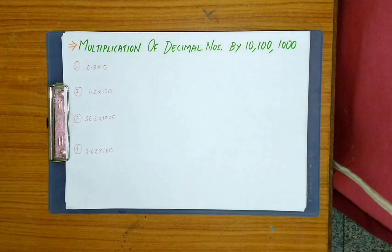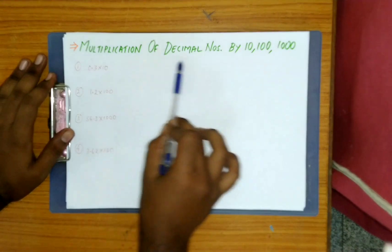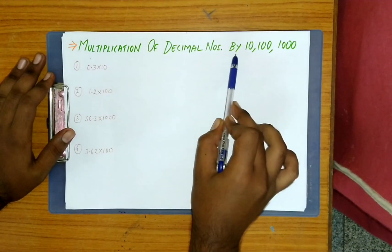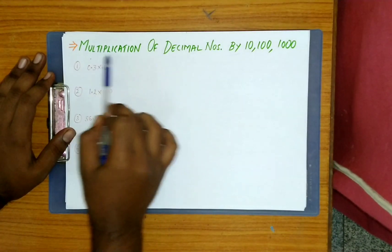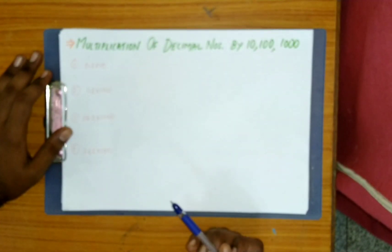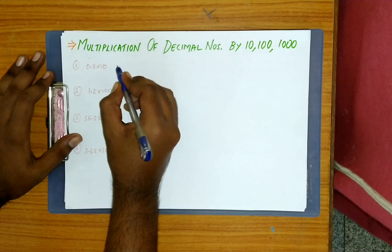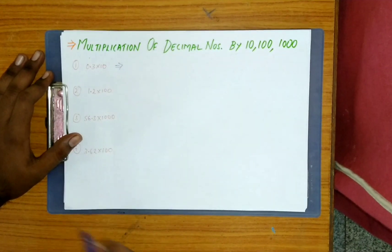Hello guys, in this video we are going to discuss the topic multiplication of decimal numbers by 10, 100, 1000. We are going to do the multiplication by normal method.